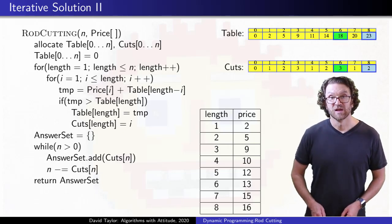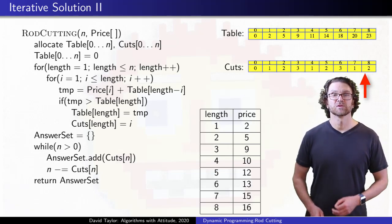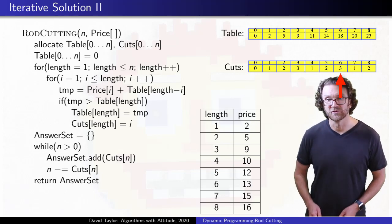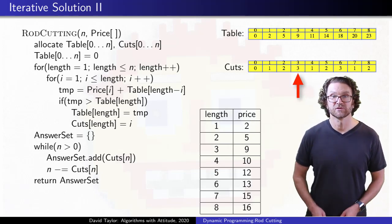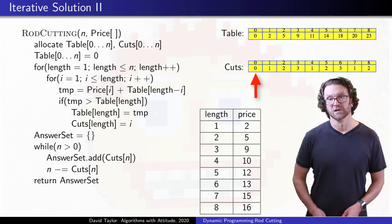that table lets me reconstruct the cuts I need to make. In this instance, if I have a length 8 rod, I should cut off 2 and sell it, leaving me with 6. The table tells me that for 6, I cut off 3 to sell, and then the remaining 3 also gets a size 3 rod to sell, leaving me with 0, and we are done.